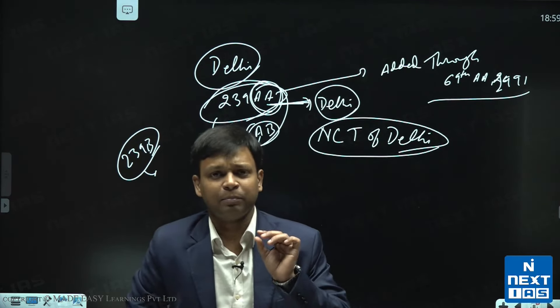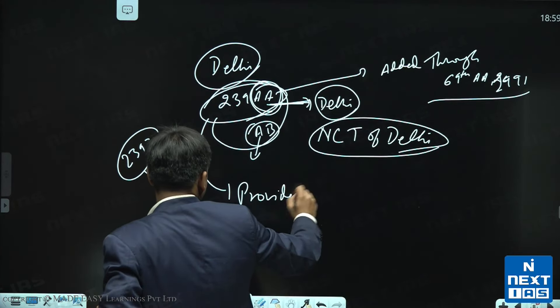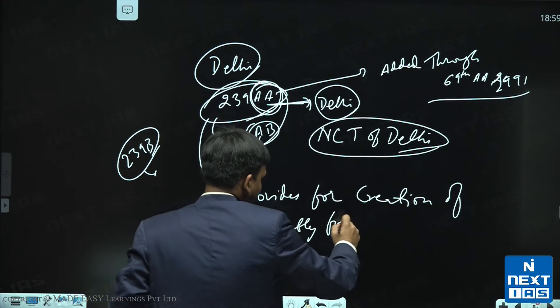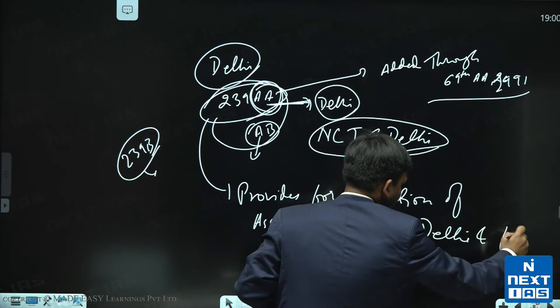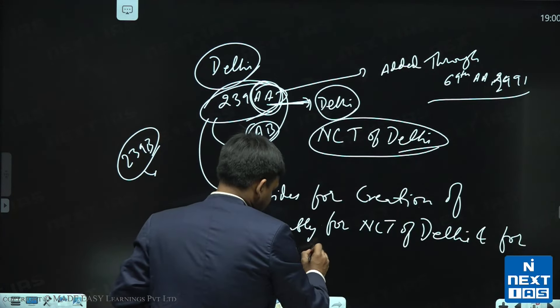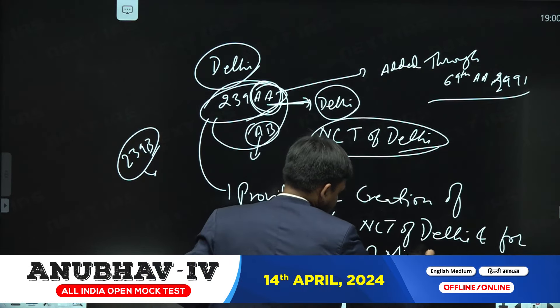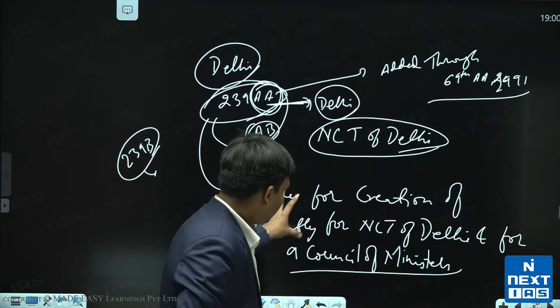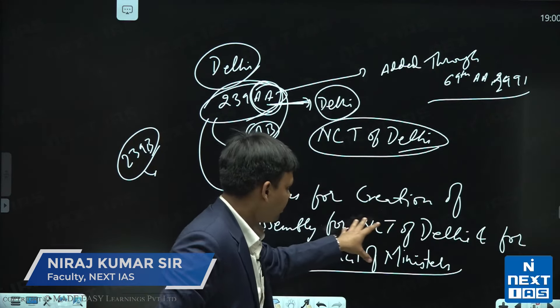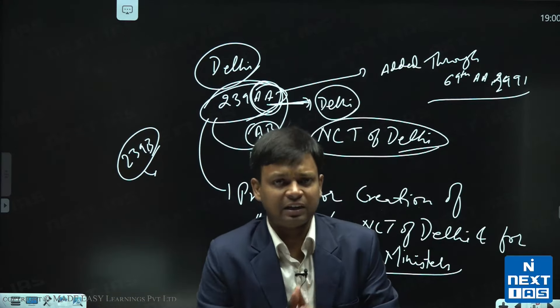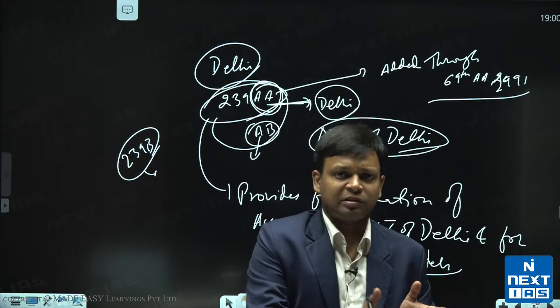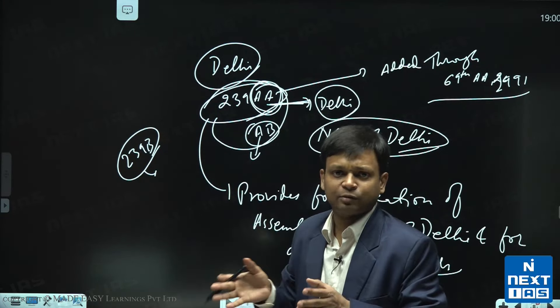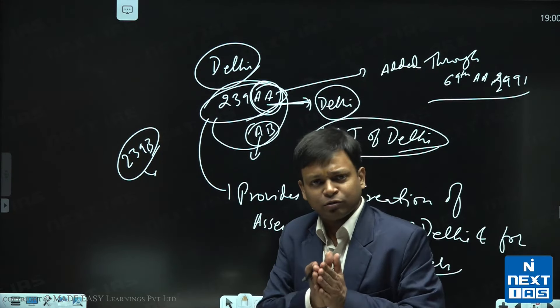Article 239 AA, it is the mini constitution for Delhi. It provides for creation of assembly for NCT of Delhi and for a council of ministers. Delhi में जो assembly बन रहा है, वो Article 239 AA से बन रहा है. It is an assembly with 70 members, reservation के provisions, council of ministers का size, वो सारी चीज़े इसी article में मिलती हैं. Six ministers plus the CM, the seven will be the strength of the council of ministers.